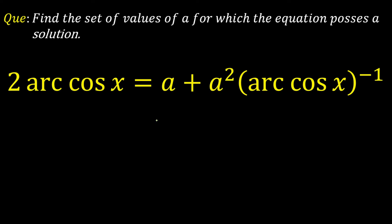Hello everyone. Today we are going to look at a problem from inverse trigonometric functions, that is ITF. The question is: find the set of values of A for which the given equation possesses a solution. The given equation is 2·cos⁻¹(x) = A + A²·(cos⁻¹(x))⁻¹. We have to calculate the value of A for which this equation will have some solution.